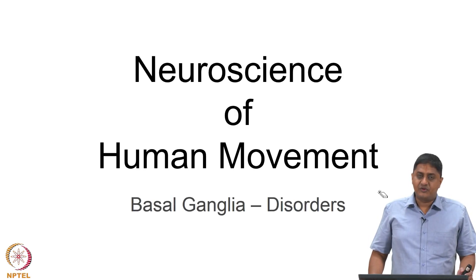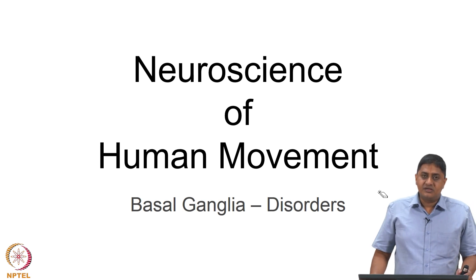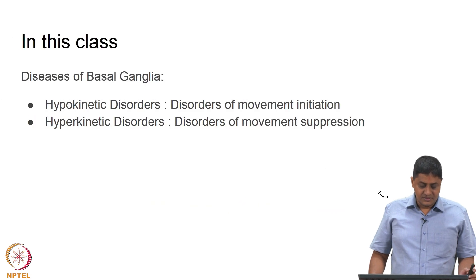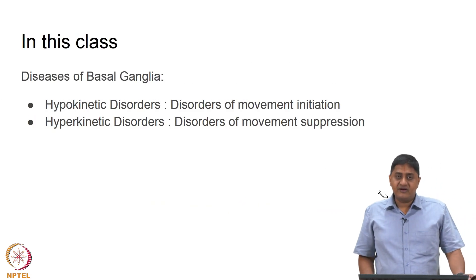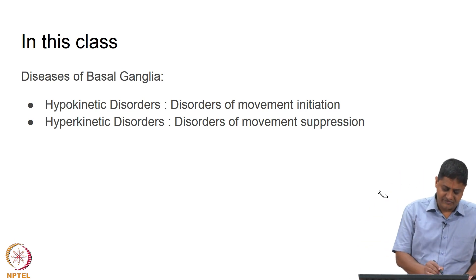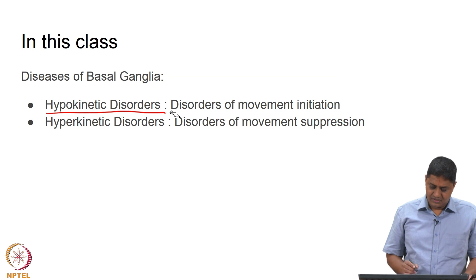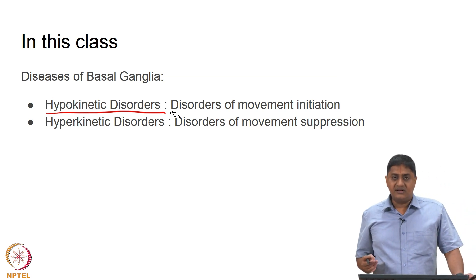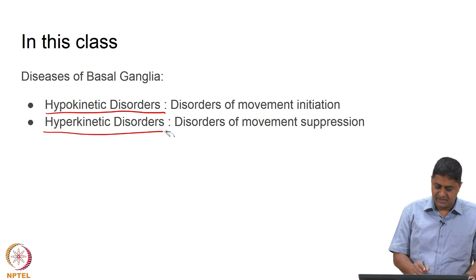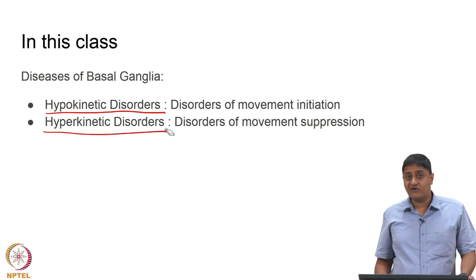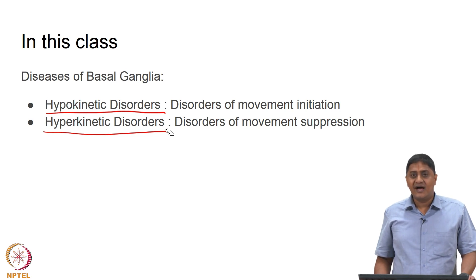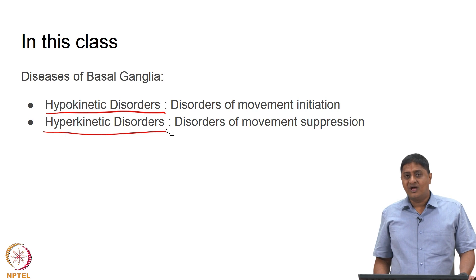Welcome to this class on Neuroscience of Human Movement. In this class, we will be talking about some of the disorders that affect the basal ganglia. We will take a couple of examples, one each for each kind of disorder: the hypokinetic disorders, where there is a difficulty in initiating or selecting movements, and hyperkinetic disorders, in which it is difficult to suppress unwanted movements. In the hypokinetic case, I am unable to perform intentional, volitional, wanted movements. In the hyperkinetic case, I am producing movements that are not wanted — I am doing things that I do not want to do.